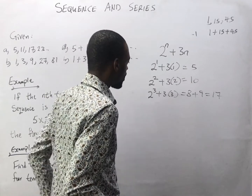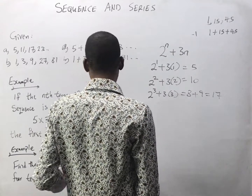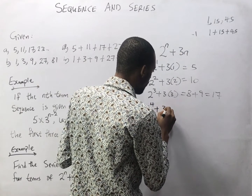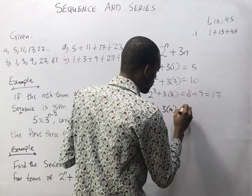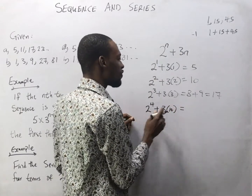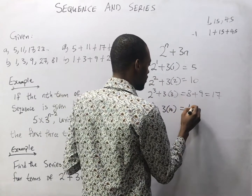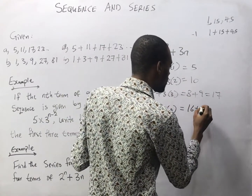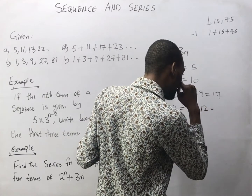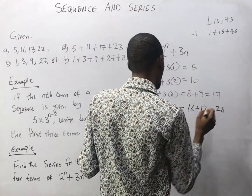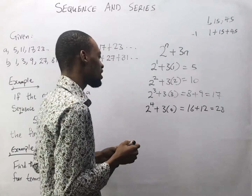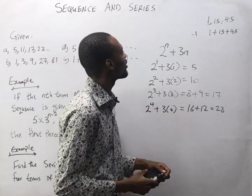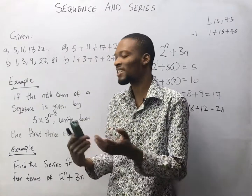The fourth term, n equals 4: 2 to the power of 4 plus 3 times 4 equals 16 plus 12 equals 28. So the series for the first four terms is 5 + 10 + 17 + 28. That's how you solve for series.